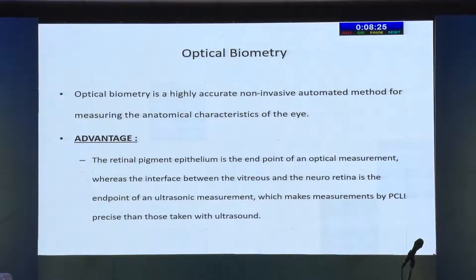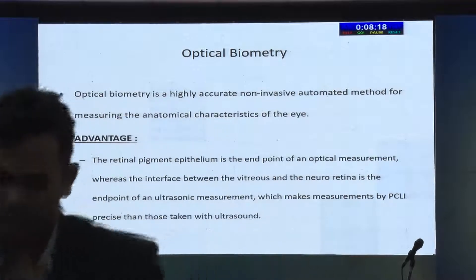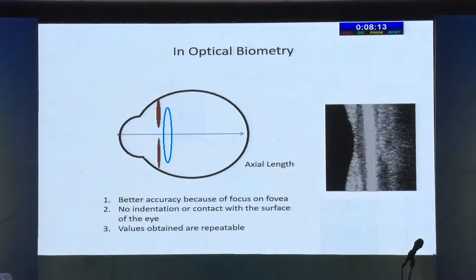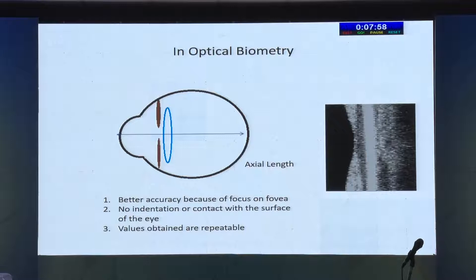Optical biometry is a highly accurate, non-invasive, automated method, and we all know axial length comes out very, very accurately. But is that the only point? In optical biometry, because you're looking at fixation of the patient into the light source, you most probably are getting the evaluation right through the fovea. So your axial length is not only accurate because you're using light instead of sound — you're also getting it along the visual axis perfectly.